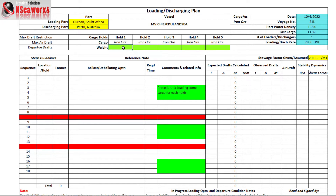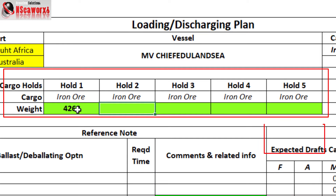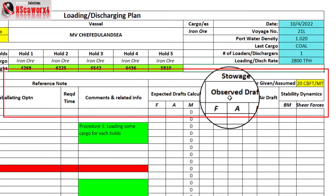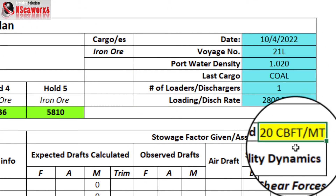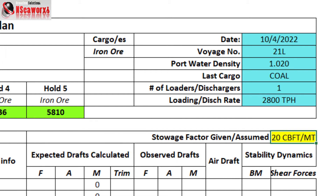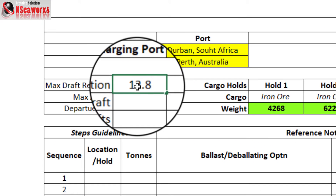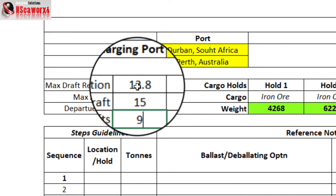We put in the weight first. For example, cargo hold number 1 is about 4,268 tons, number 2 is about 625 tons, number 3 is about 6,542 tons, number 4 is 6,436 tons, and number 5 is 5,810 tons — a total of 29,285 tons from the previous section in Part 2. We have a stowage factor of 20 cubic feet per metric ton, a port draft restriction of about 12.8 meters, a maximum air draft of about 10 meters, and a departure draft of 9.8 meters.